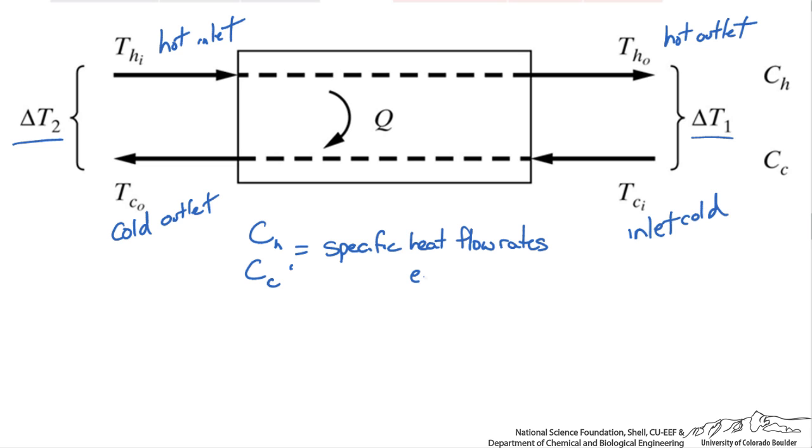The values CH and CC are the specific heat flow rates, with units given as energy per temperature. If we write out our equation for heat transfer, it is just going to be for the hot stream our CH times the temperature difference between the outlet and the inlet. We can do the same for the other side.